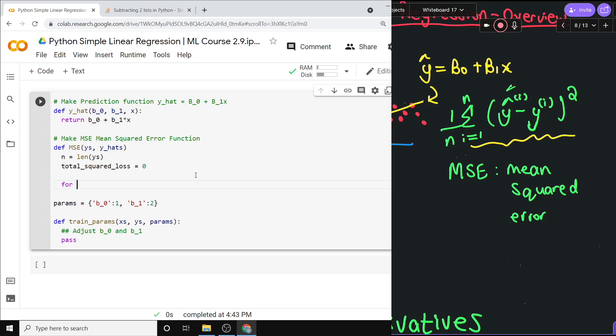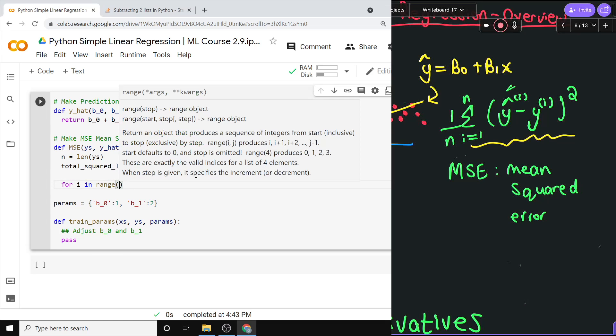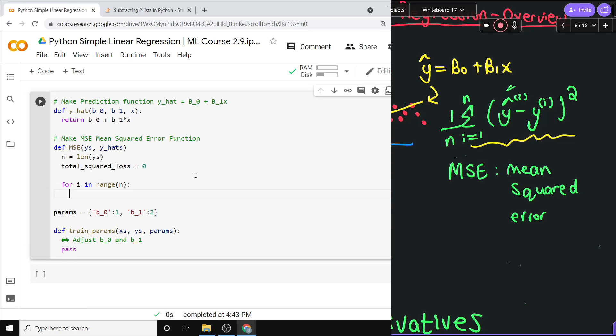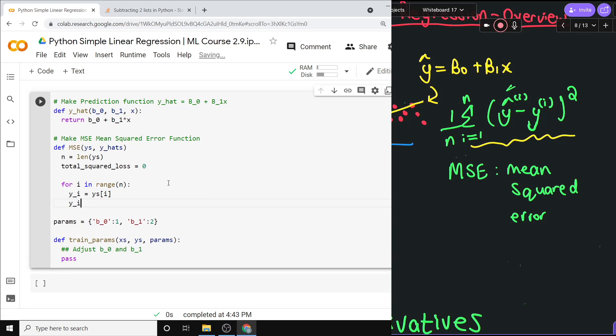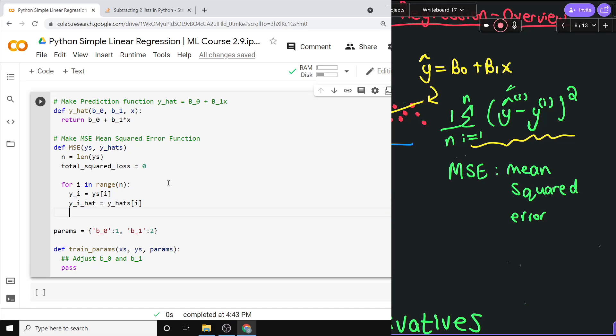So then to really set this up in the same way as it is written in the math, we would do for i in range up until n. So that's going to go from i is 0 up until n minus 1. Those are going to be the proper indices for our Python list. So we could do yi is equal to the y's sub i, and then yi hat is equal to the y hat's sub i. So we have each of those two things as variables now.